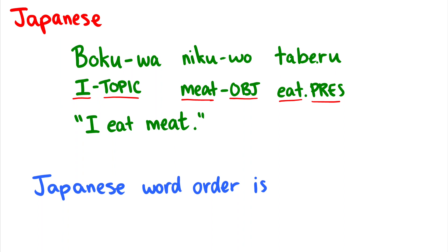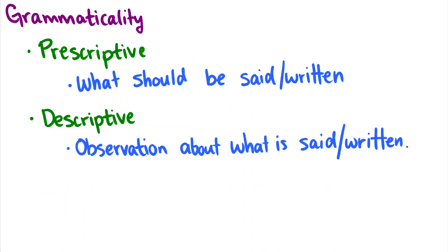What we can see from this is that Japanese has the subject at the beginning of the sentence, then the object, then the verb — so Japanese word order is SOV. In fact, SVO and SOV are the two most common word orders across all languages.